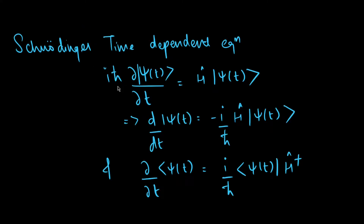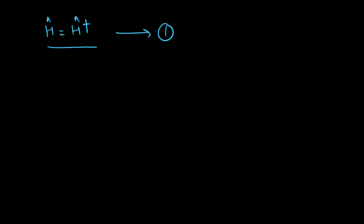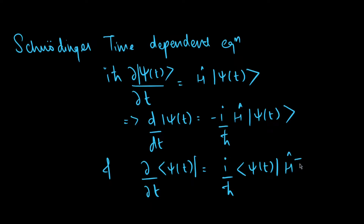The Schrödinger time-dependent equation is given by iℏ ∂/∂t |ψ(t)⟩ = Ĥ|ψ(t)⟩. Algebraically manipulating this, we get ∂/∂t |ψ(t)⟩ = −(i/ℏ) Ĥ|ψ(t)⟩, and ∂/∂t ⟨ψ(t)| = (i/ℏ) ⟨ψ(t)| Ĥ†. Since our Hamiltonian is Hermitian, we can remove the dagger. Let's name these as equation two and equation three respectively.